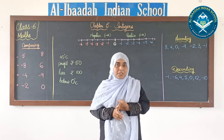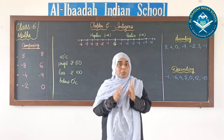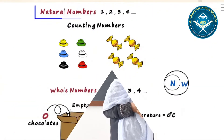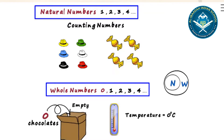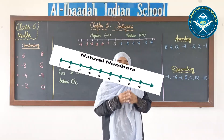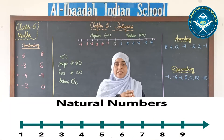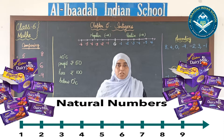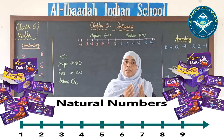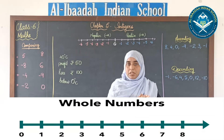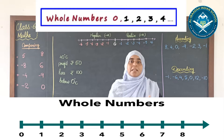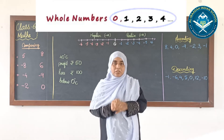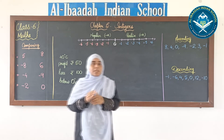In our previous video, when we were doing whole numbers, I had told you about two different types of numbers — counting numbers, also called natural numbers, and whole numbers. Natural numbers start from one: 1, 2, 3, 4, 5. Whole numbers start from zero: 0, 1, 2, 3. This we have already discussed.